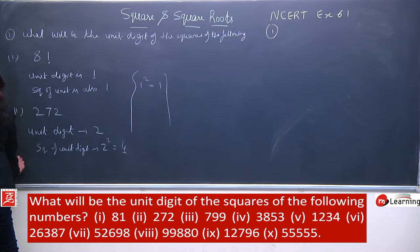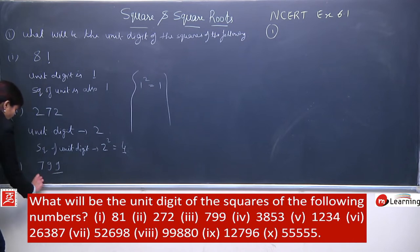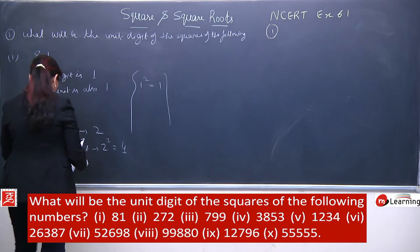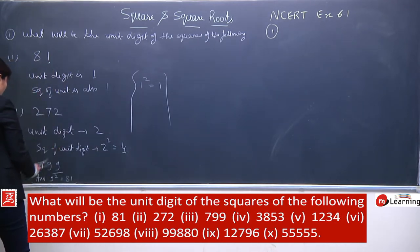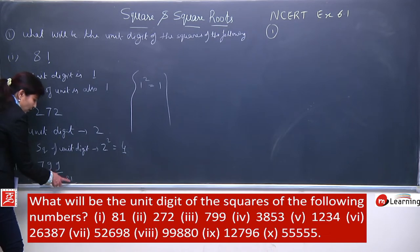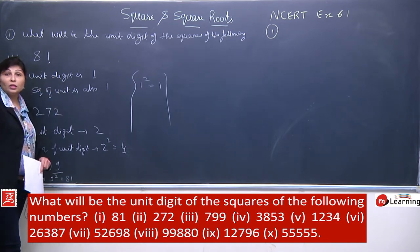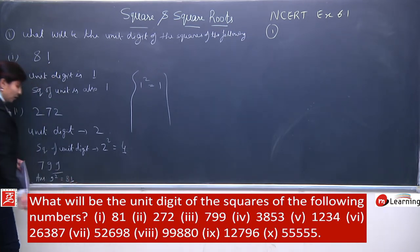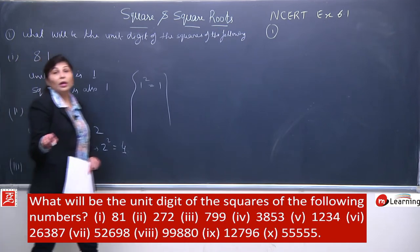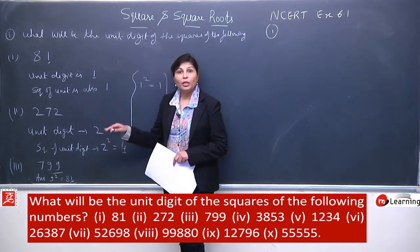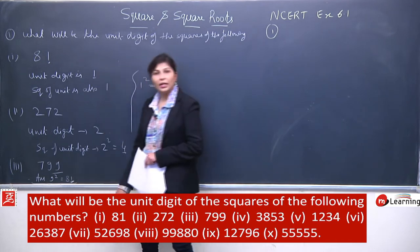Third number: unit digit is 9, so 9 squared means 81. But your answer will not be 81. They have asked: what will be the unit digit of the square? After squaring, the unit digit that comes — what will it be? It will be 1, not 81. 81 is the square of 9, but from that, the unit digit we identify is 1.